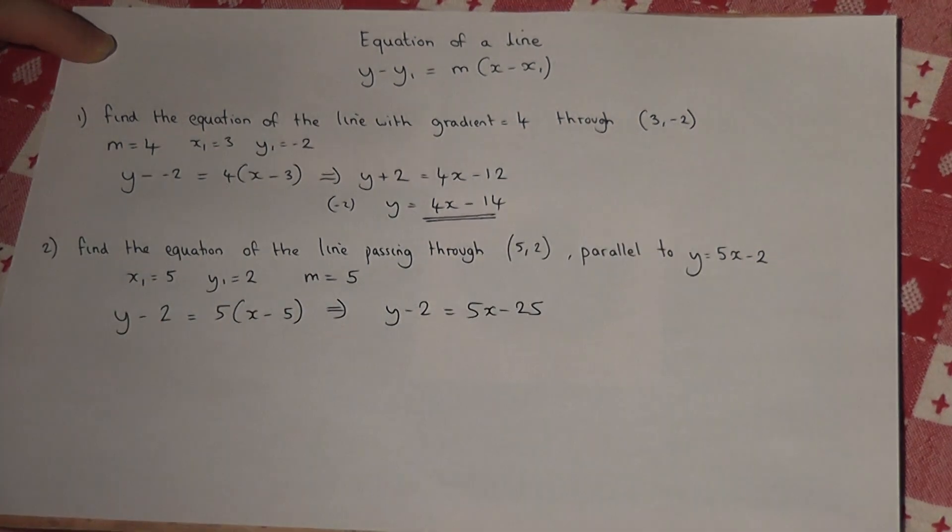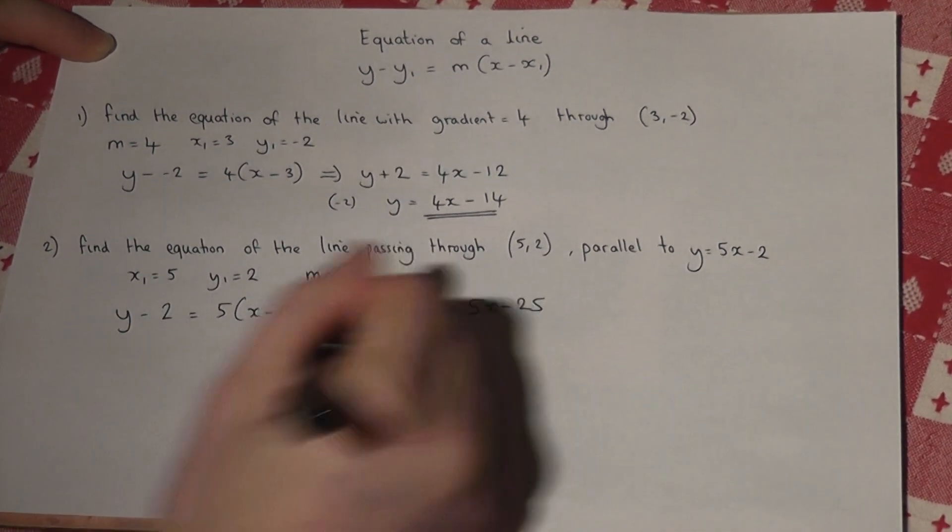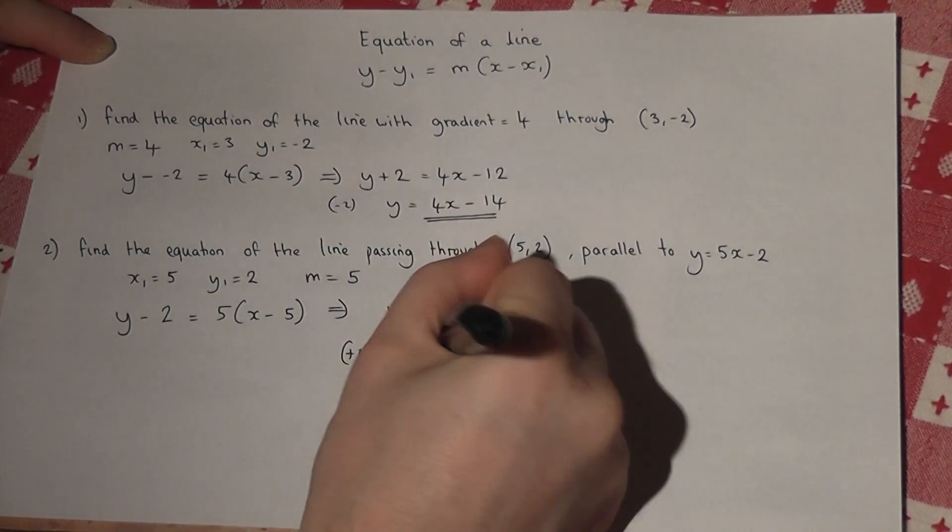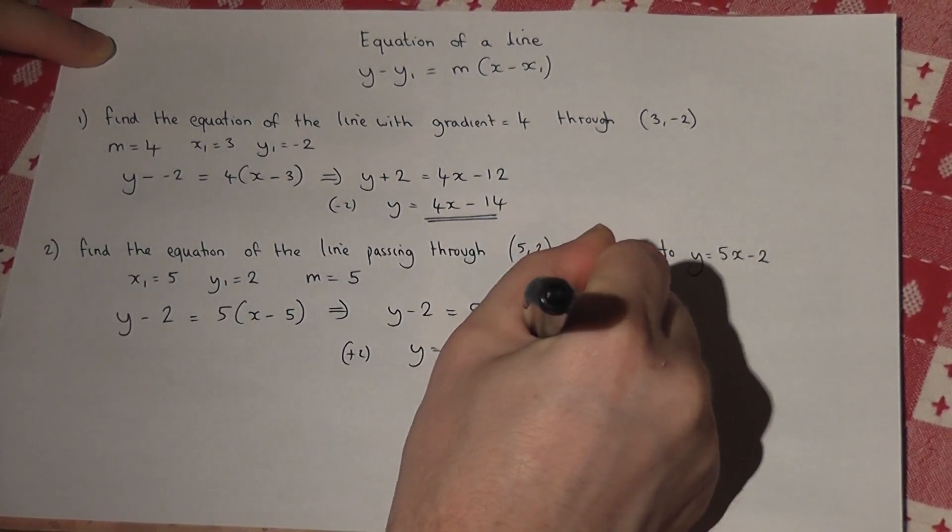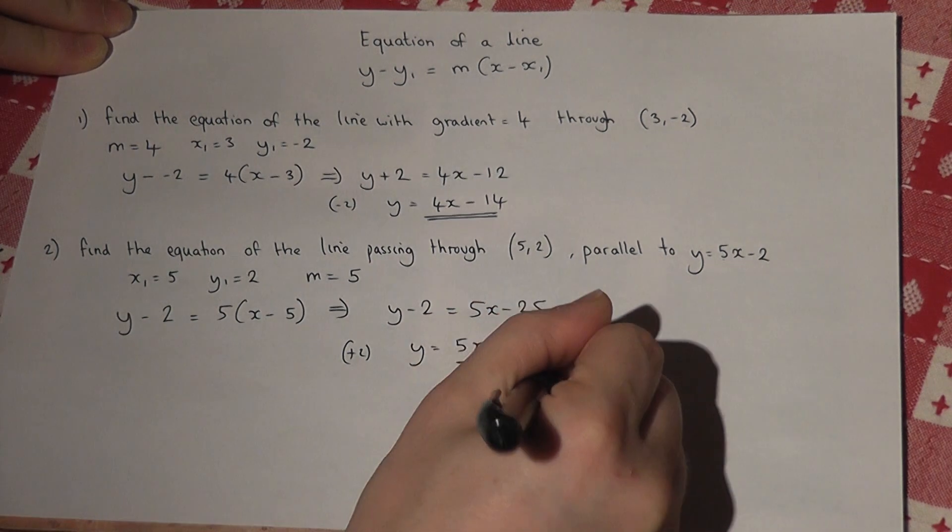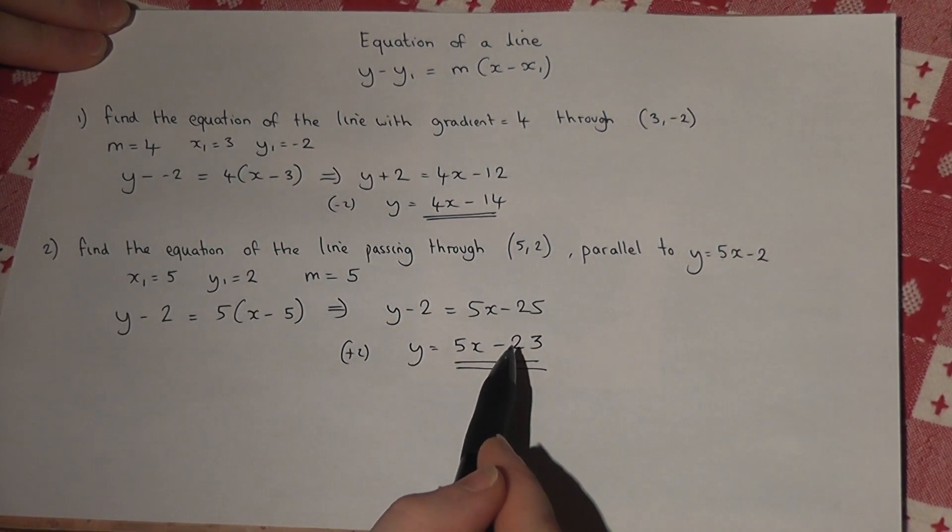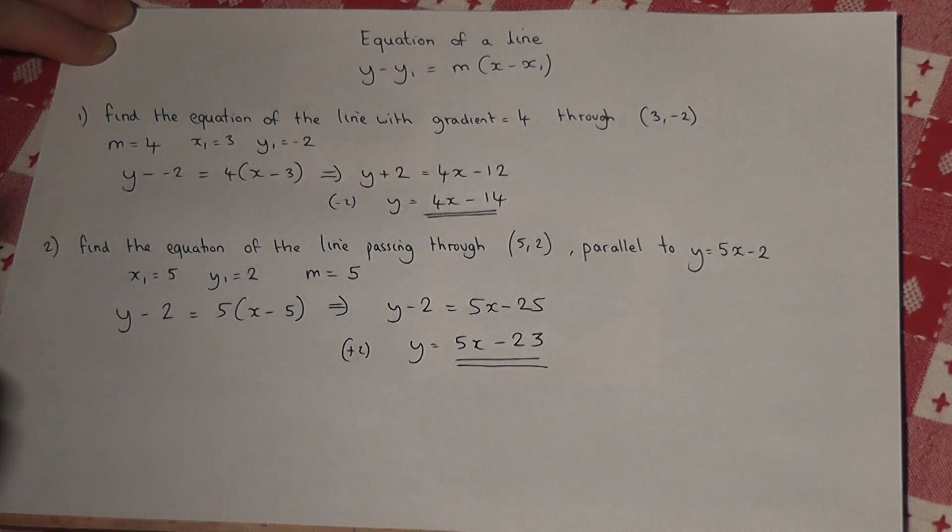Adding 2 to both sides: y equals 5x—be careful—minus 23. So the line has a gradient of 5 and a y-intercept of negative 23.